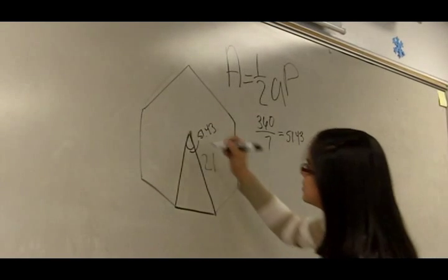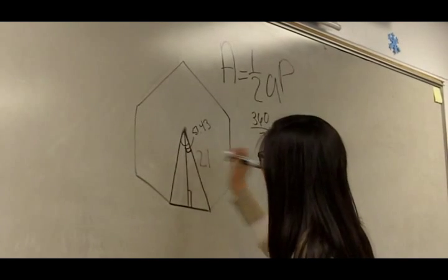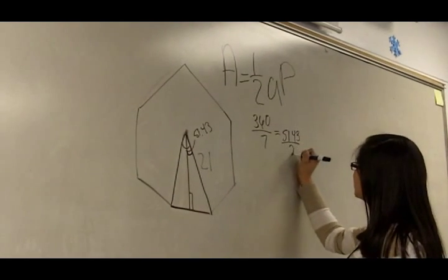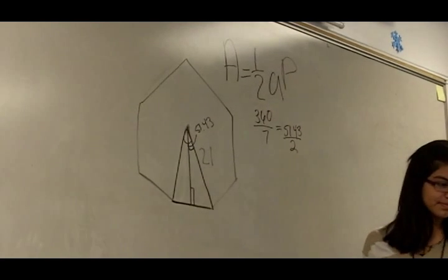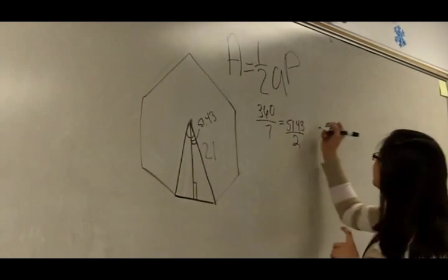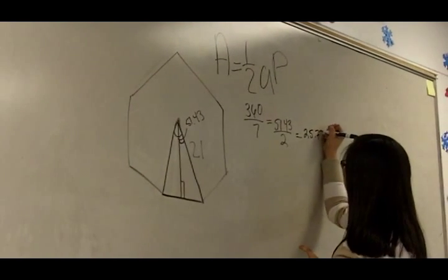Then you bisect it to get a right triangle, and you have to divide it by 2, since bisect is cutting in half. This equals 25.72.